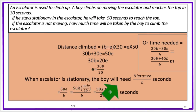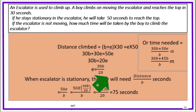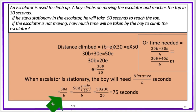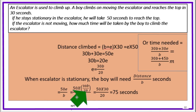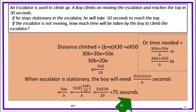When the escalator is stationary, the boy will need distance divided by b seconds. The time equals 50e divided by b, which equals 50 into (30b divided by 20) divided by b. The b cancels, giving 50 into 30 divided by 20, equal to 75 seconds. So the boy alone needs 75 seconds to climb when the escalator is stationary.